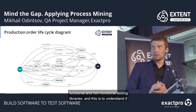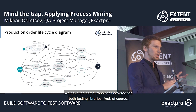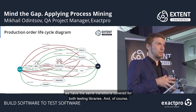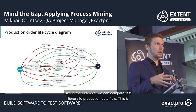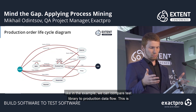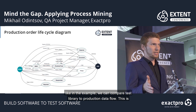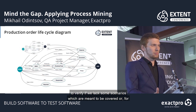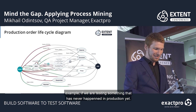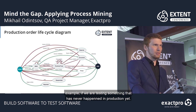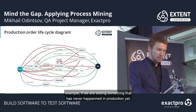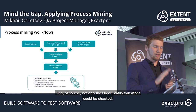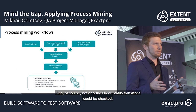And of course, we can compare a test library to production data flow — to verify if we lack scenarios that are meant to be covered, or if we are testing something that never happens in production. And not only order status transitions can be checked; similarly, we can build diagrams for instruments, session transitions, market data, and more.